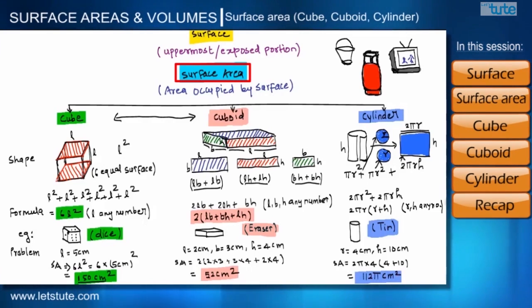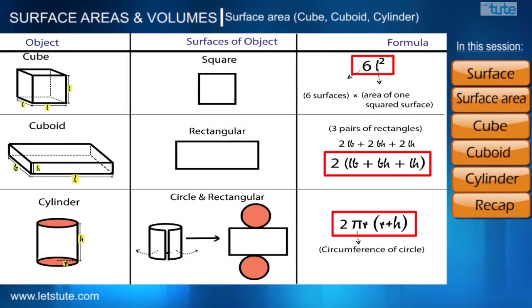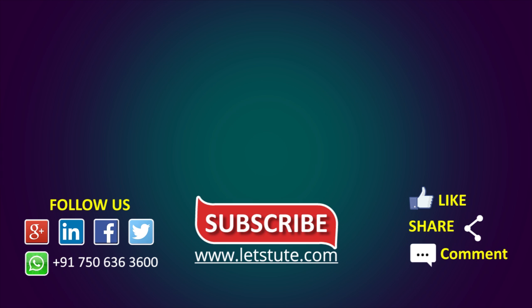Let us have a recap of this session. First, we studied what is surface, then what is surface area. Then we defined three shapes — cube, cuboid, and cylinder — and found out the total surface area of these three shapes respectively, and solved three problems based on these formulas. If you liked the video, please hit the like button, share with your friends, and post your comments. You can watch the entire CBSE math syllabus on our YouTube channel — do subscribe and press the bell icon.